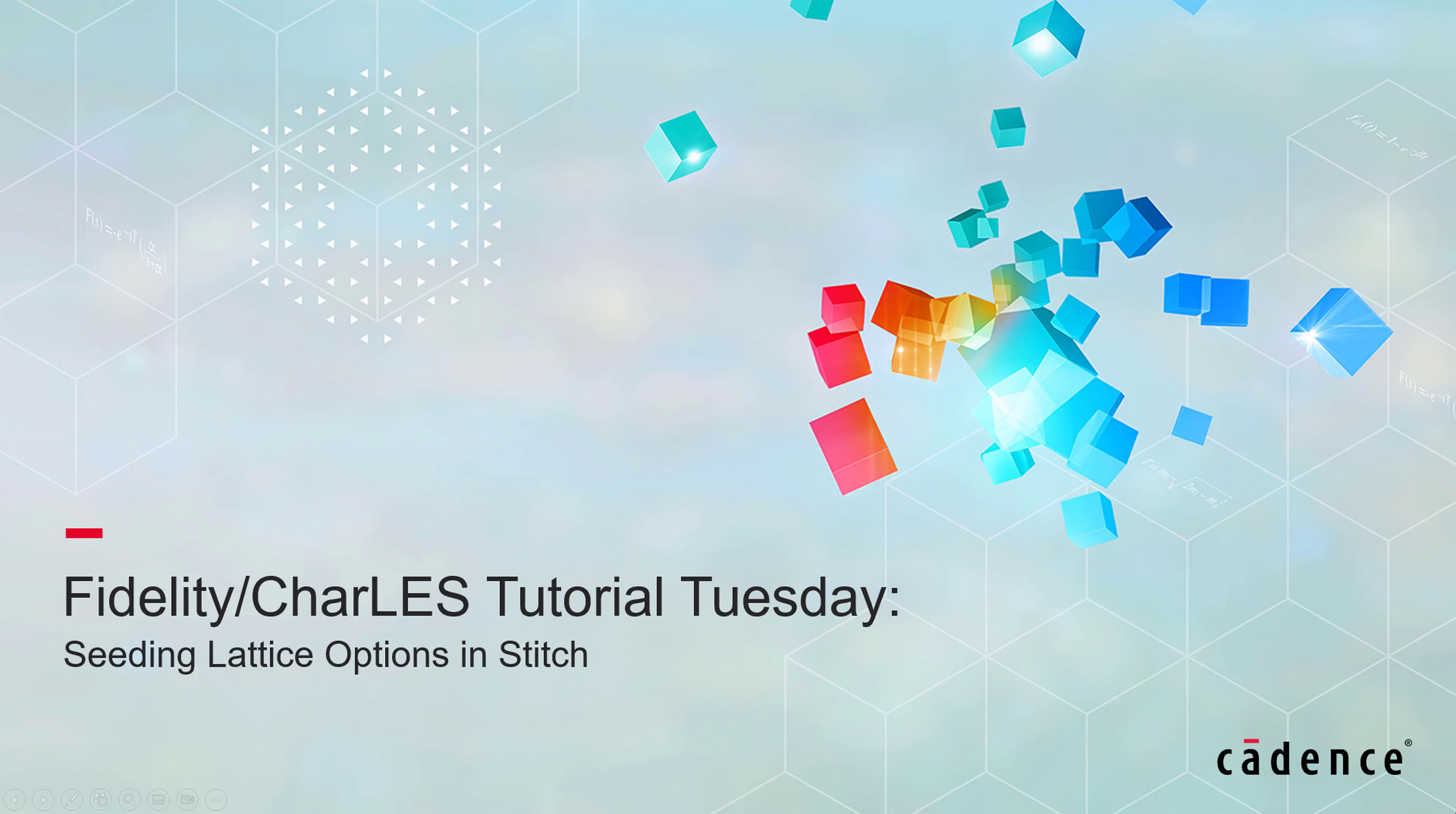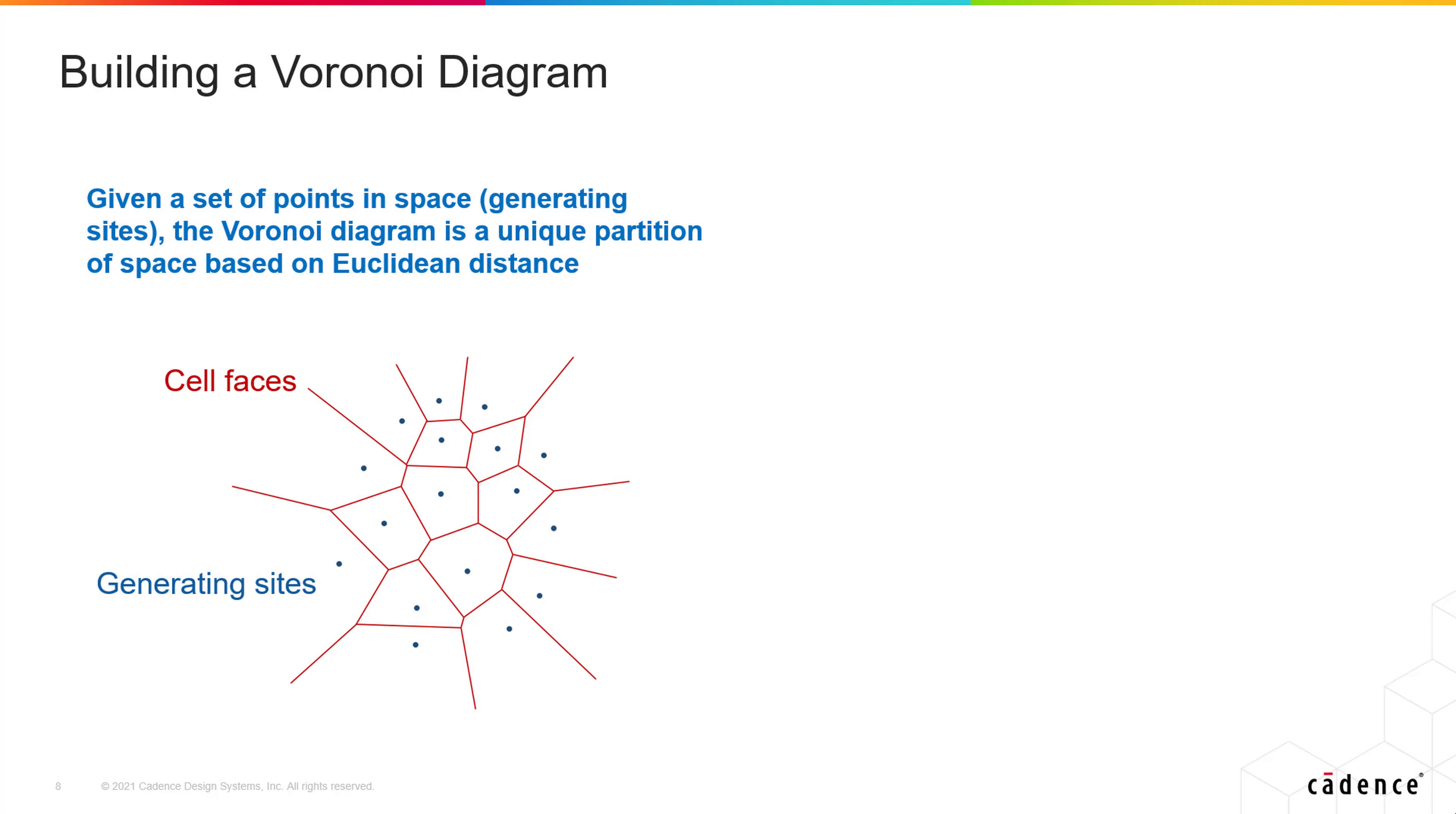So let's discuss the Voronoi diagram technique. In a nutshell, it is a unique partition of the space based on a set of points, called the generating sites or seeding points, and the Euclidean distance between them.